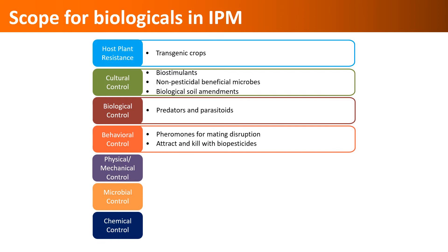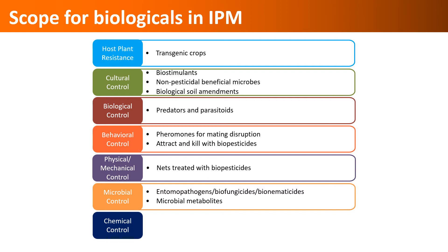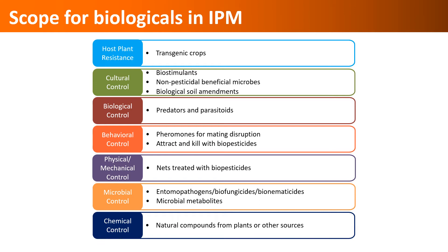As part of behavioral control, pheromones are successfully used for controlling several pests. Biopesticides can also be used in some devices to attract pests and kill them. Similarly, netting used in fields, greenhouses, or animal and poultry farms can be treated with microbial or other biopesticides. Microbial control with various entomopathogens or microbial metabolites is a well-known non-chemical control option.